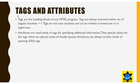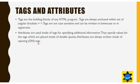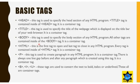Tags are the building blocks of any HTML program. They are always enclosed within angular brackets, and are not case sensitive. Attributes are used inside tags to specify additional information; they specify values for the tags placed inside double quotes. Attributes are always written inside the opening tag and are part of the tag. We cannot write any attribute without writing the tag.